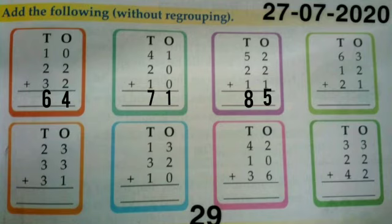In the same way, we will solve the next question 63 plus 12 plus 21. First we will add the numbers in ones column and then we will add the numbers in tens column and get the answer.